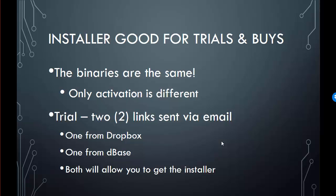When you get a trial you'll get two links sent from D-Base. One goes to Dropbox, which is a faster way to download it, but some corporations limit Dropbox access. The other link is from D-Base directly, which will allow you to get it if you can't get it from Dropbox. Both allow you to get the installer, and again the installer is the exact same for the full product.